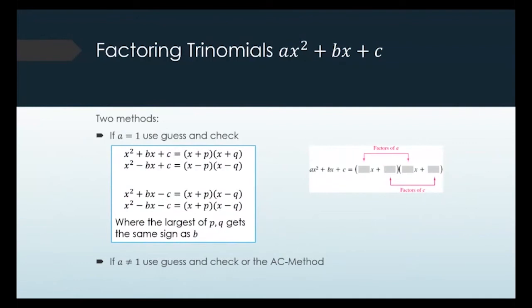When you're factoring trinomials, we're looking specifically at things — a trinomial is three terms — and we're looking for them where they specifically have an x squared, an x, and then something without an x. Those are the most common things that we are factoring.